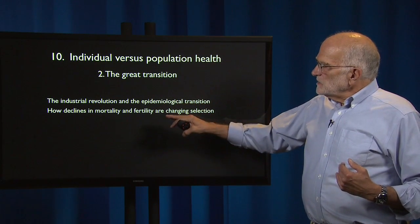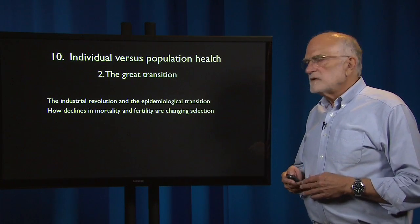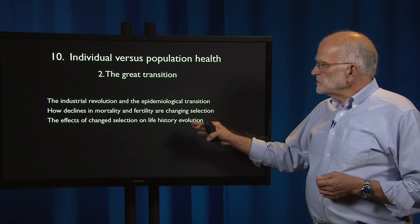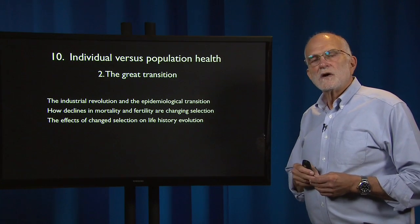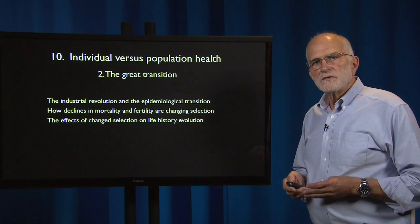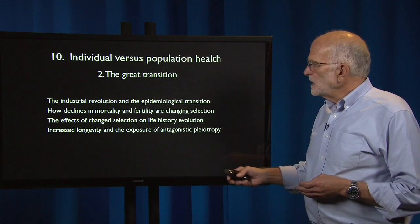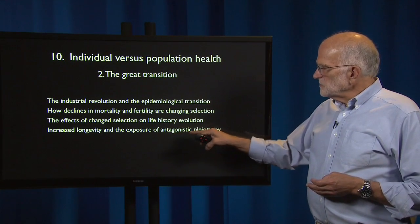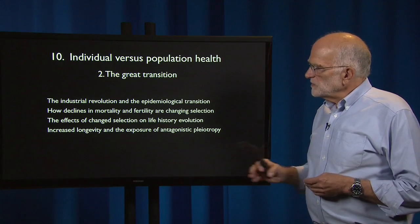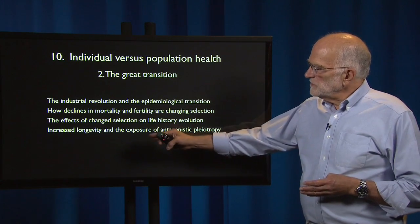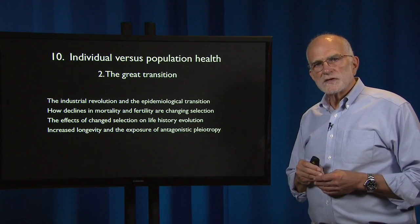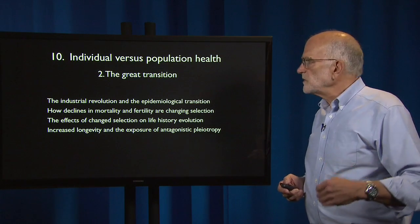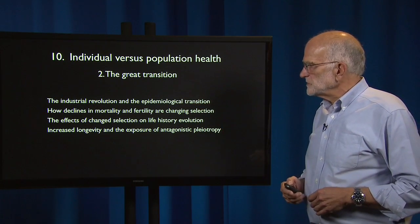The Great Transition led to declines in mortality and fertility that are changing selection. The effects of changed selection are particularly noticeable in life history evolution. They have led to increased longevity and the exposure of antagonistic pleiotropy. The increased longevity is not necessarily the product of selection — it can simply be the product of decreased mortality rates resulting from these transitions.